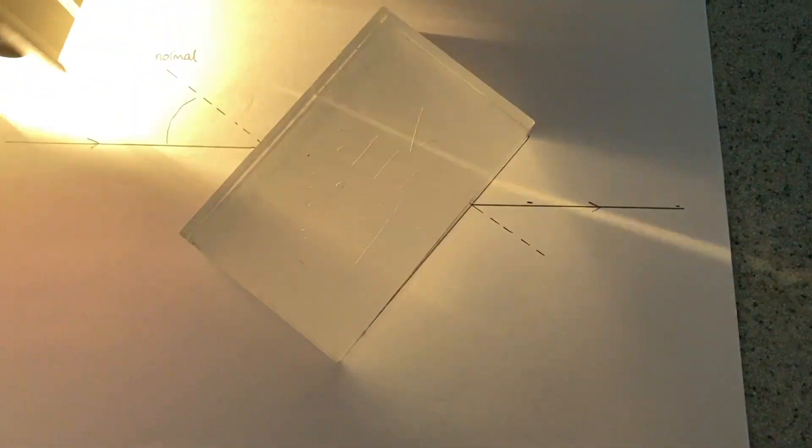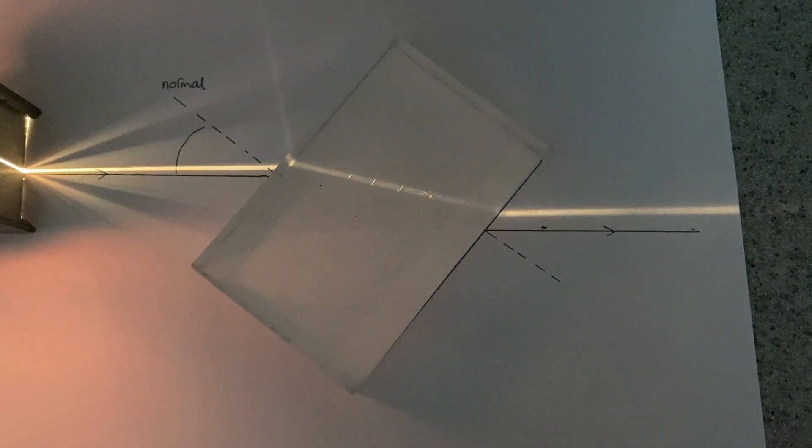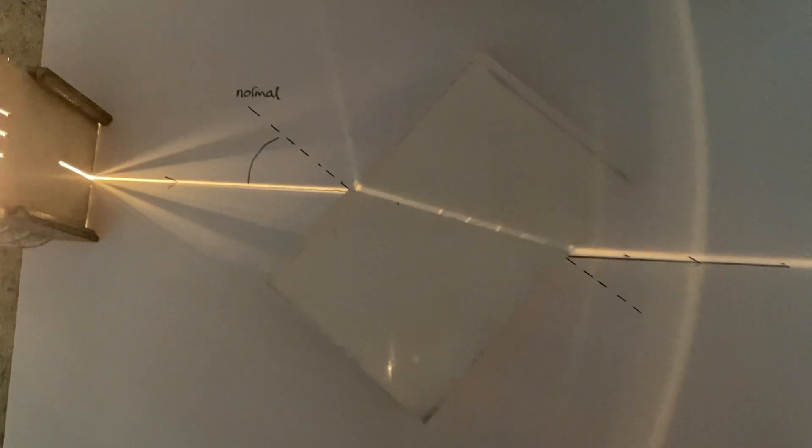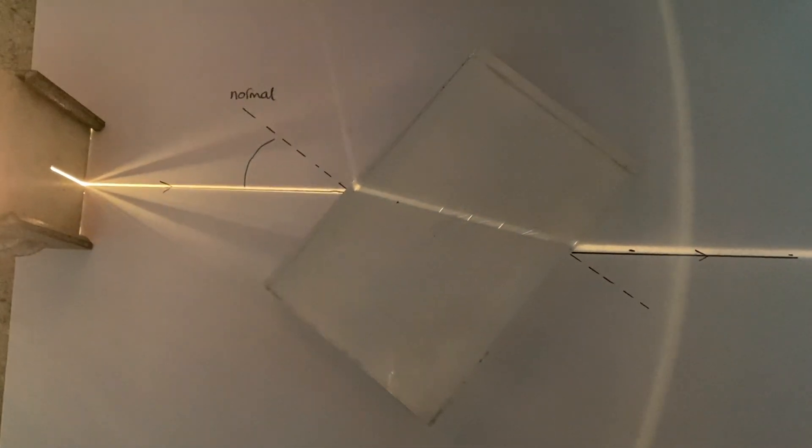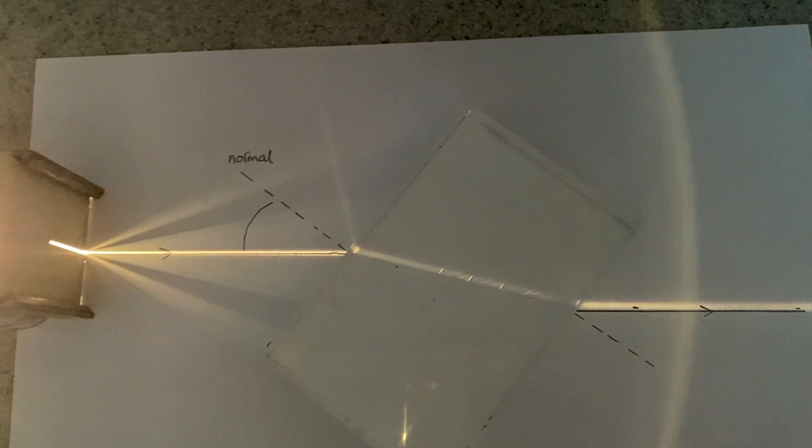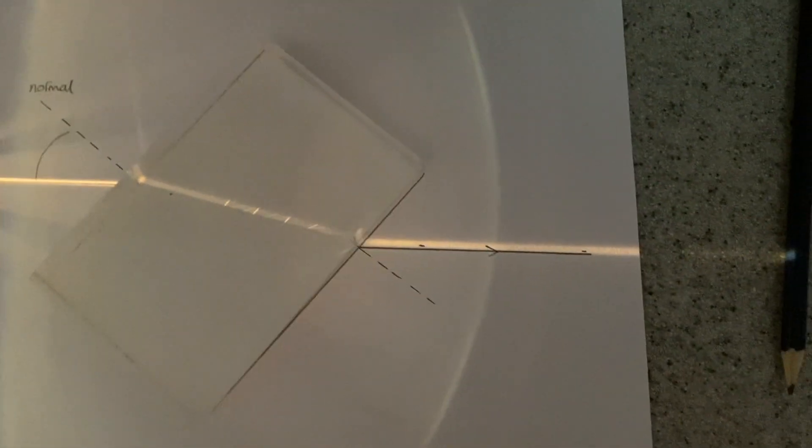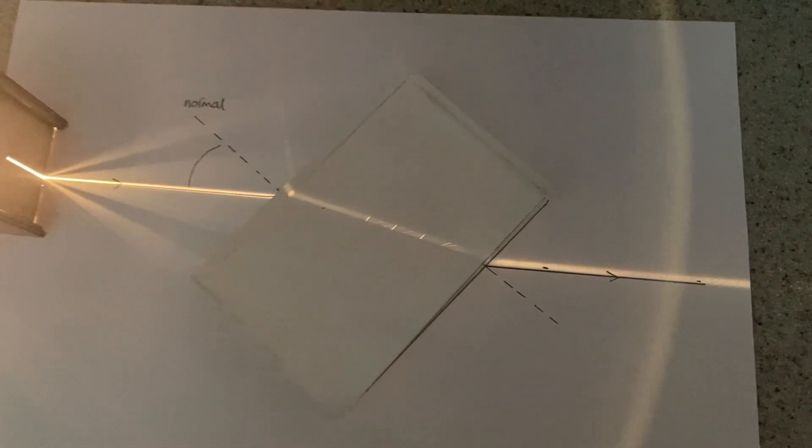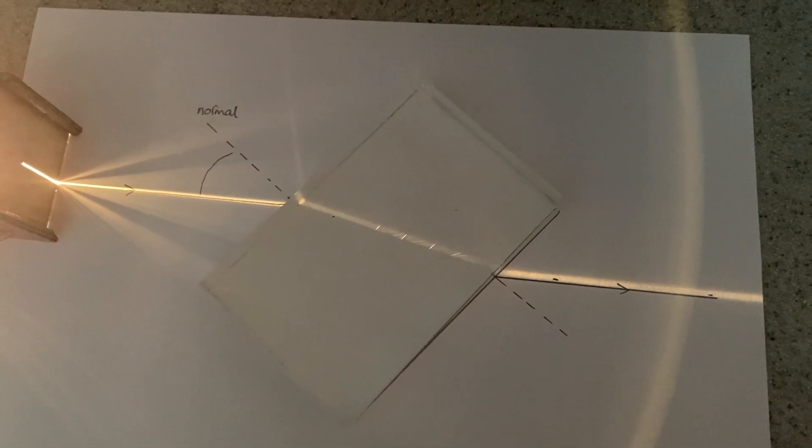That's the light travelling along the normal and it just carries on as normal through the glass. It's not bent at all, but if we shine it in at an angle to the normal, then when it goes into the glass, it gets bent towards the normal. And then when it re-enters the air again, it goes from glass to air, it gets bent away from the normal. Let's measure those angles and I'll show you what I mean.